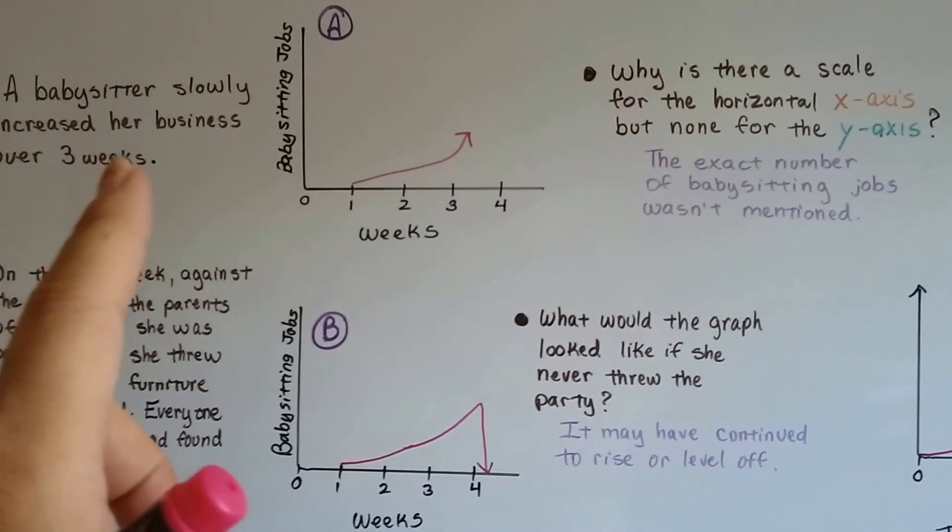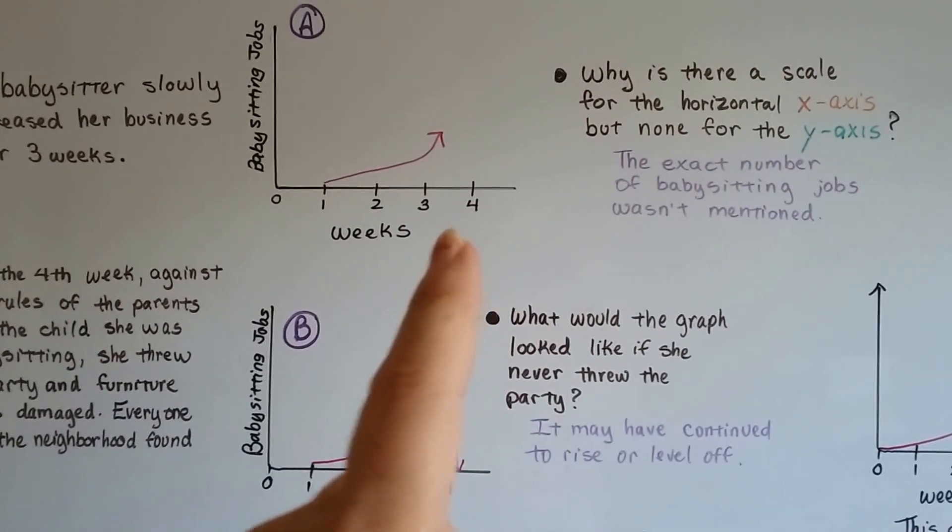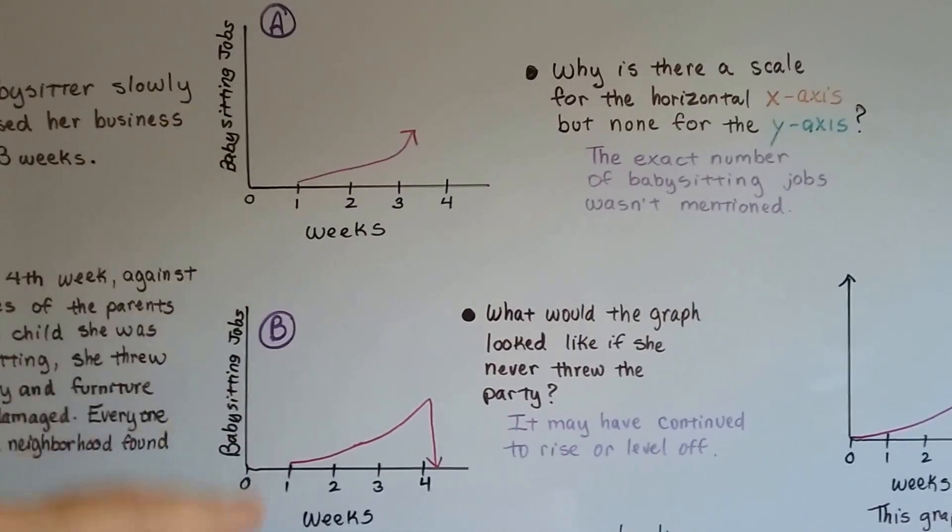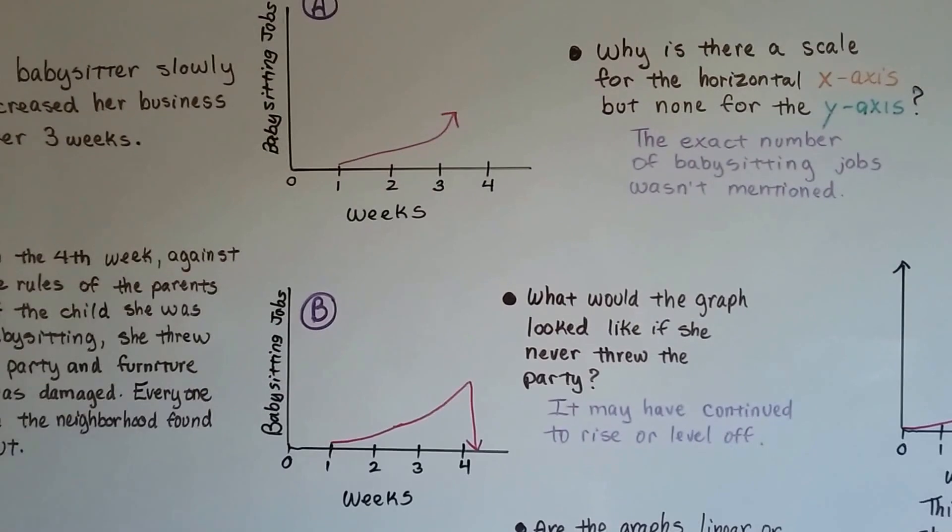It mentioned over three weeks, so we could make week increments for the horizontal axis. But it didn't say how many actual jobs she got, just that it slowly increased.